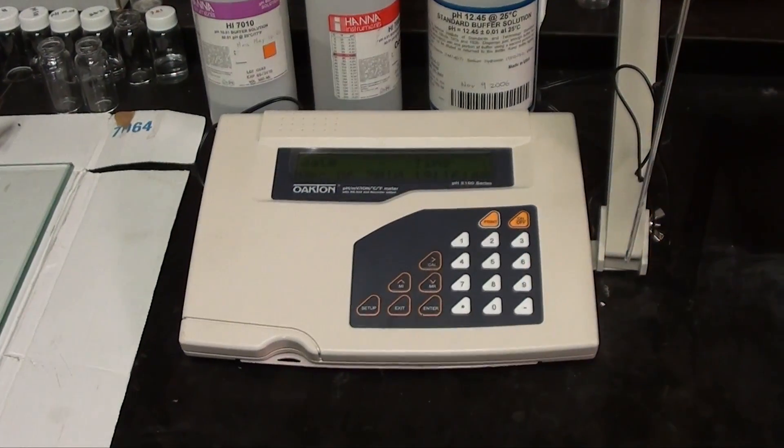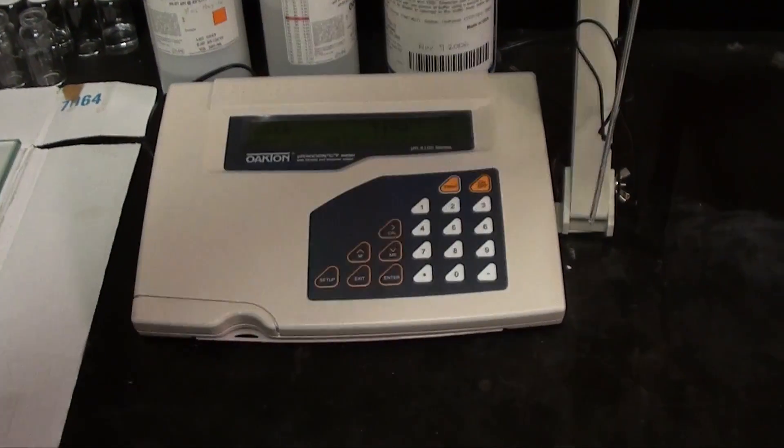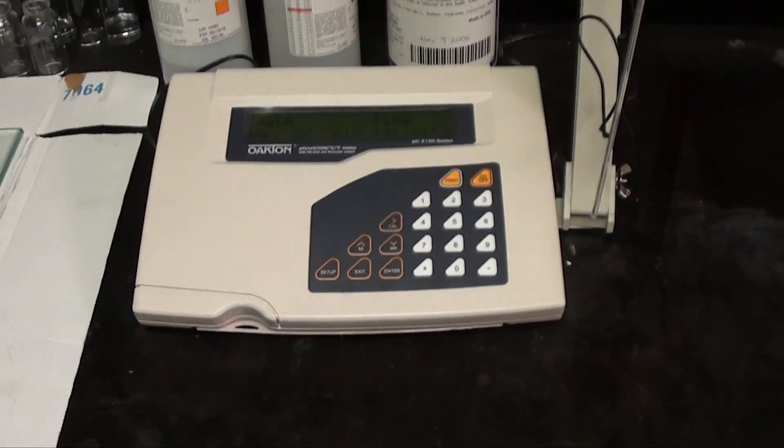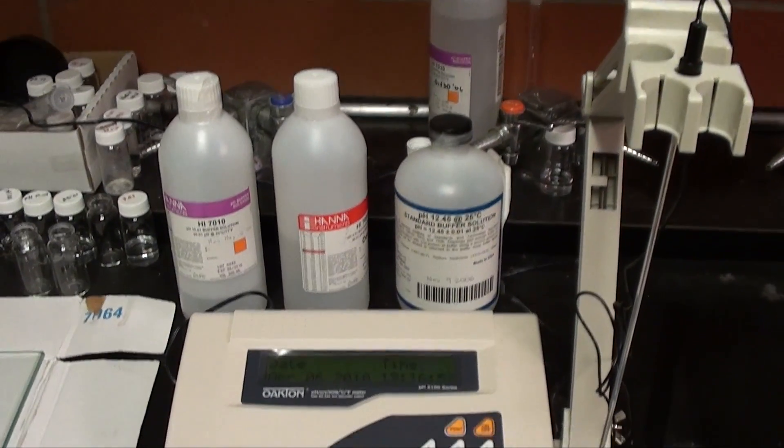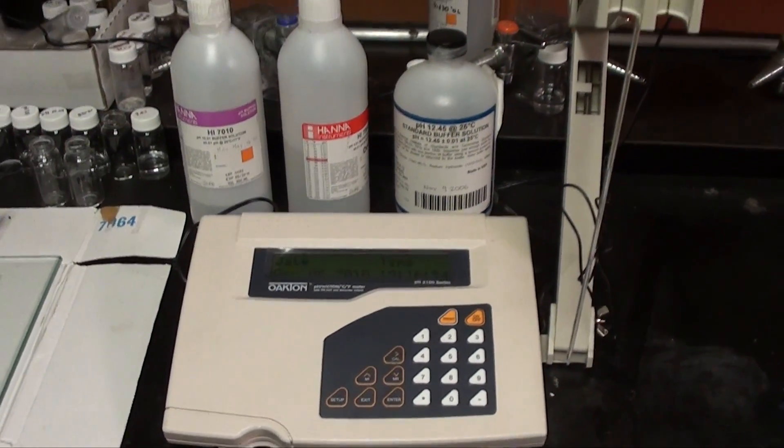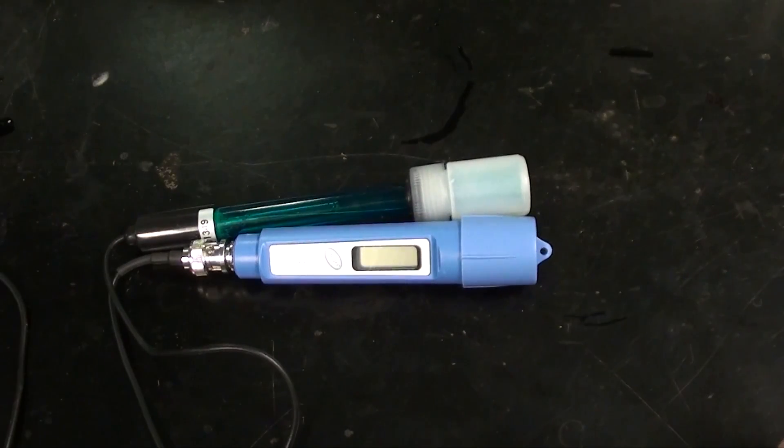For even greater precision, an expensive but high tech solution is to use a pH meter. I got this expensive laboratory model but you can get cheaper ones off eBay for about $40. It's not as good as lab grade stuff but it's still very usable.